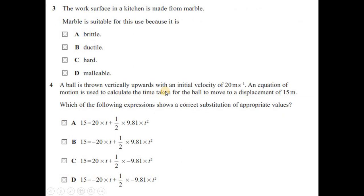Question 3: the work surface in a kitchen is made from marble. Marble is suitable because it is brittle, ductile, hard, or malleable. In a kitchen we do cutting and similar tasks that should not mark the surface. The most suitable property of marble here is that it is hard, so we can use marble in the kitchen. The answer is option C.